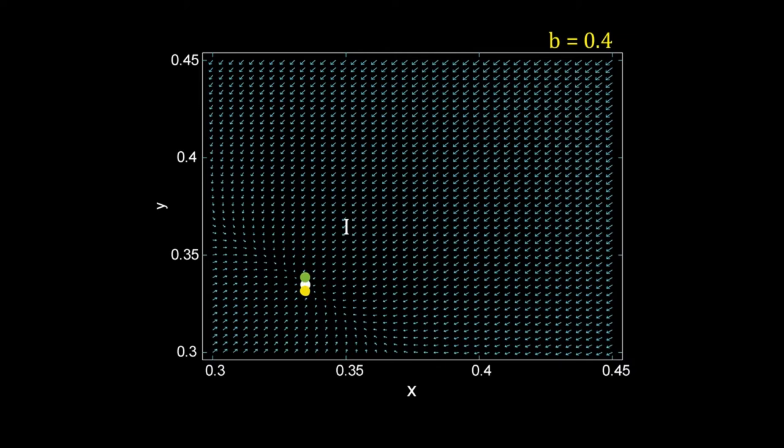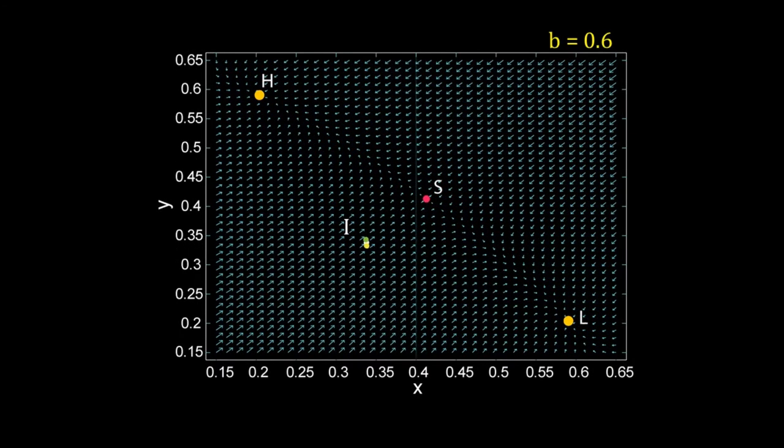And the external signal changes b to 0.6. So the phase portrait changes. Now there are two sink nodes H and L. S is the saddle. I is no more a sink, so both the green cell and the yellow cell will move from their respective positions. They will follow the arrows on the phase portrait. Following the arrows, the green cell will reach H, but the trajectory of the yellow cell is entirely different. Its initial position was slightly different from the green one. From that position following arrows, it moves to L.